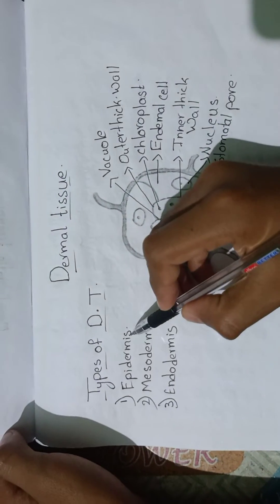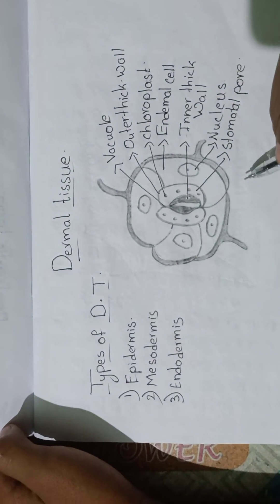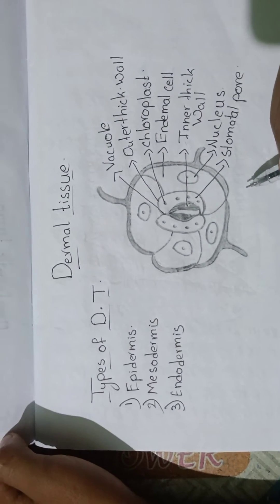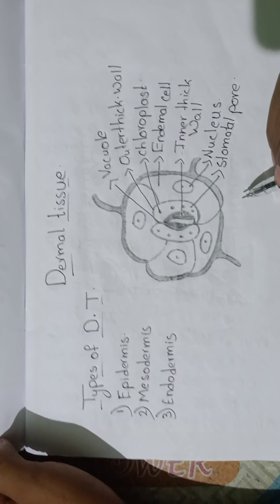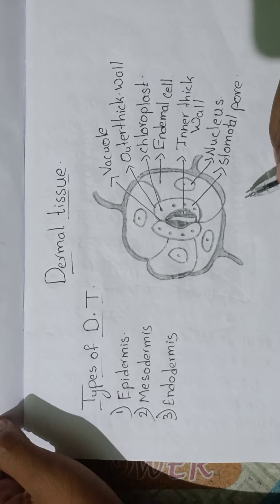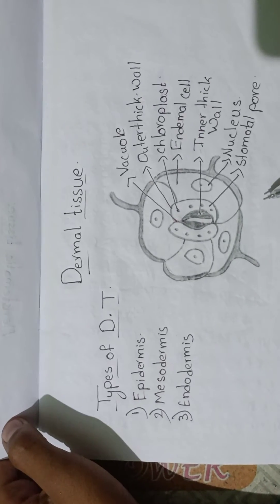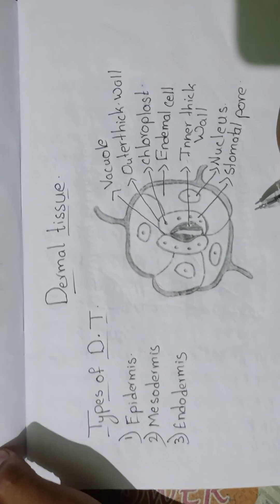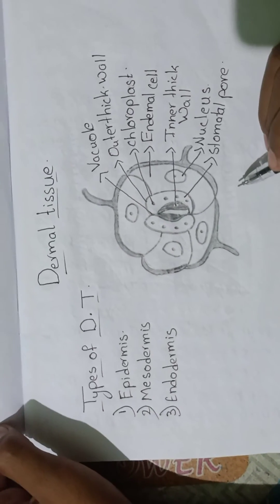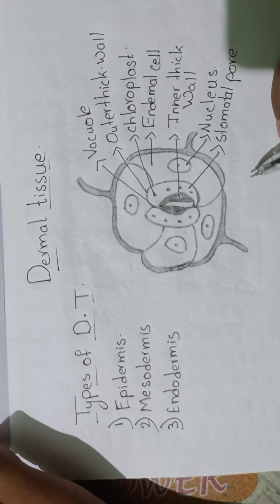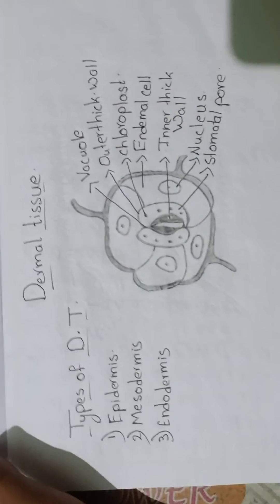They are epidermis, mesodermis, and endodermis. Epidermis is a single layer of closely packed cells. Its function is to cover and protect the plant, depending on the portion of the plant that it covers. The epidermis contains small openings called stomata, which regulate water and help with gaseous exchange.